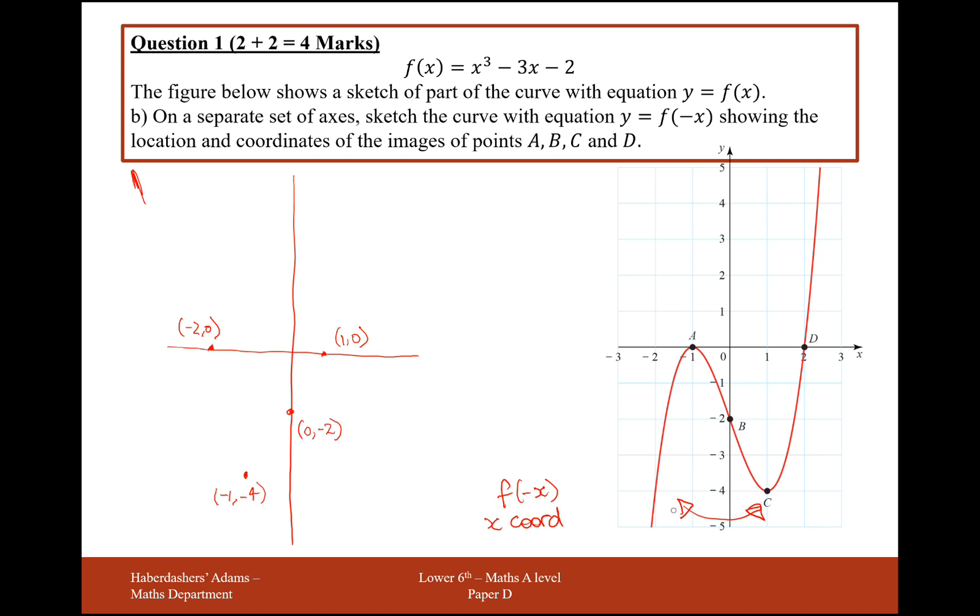And it's going to finish in the bottom left on this graph, so bottom right on this graph. So it's going to come down, intersect that axis, go back up, and come back down. Okay, great. So that's the rough shape of f of minus x, four marks.